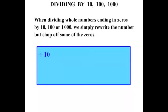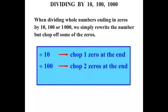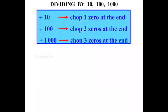If we divide by 10 we're going to chop one zero at the end. If we divide by 100 we're going to chop two zeros at the end. And if we divide by 1000 we chop three zeros at the end. Let's look at some examples now.